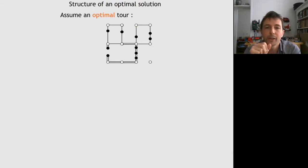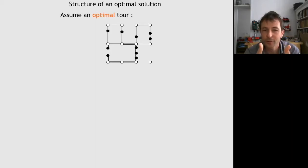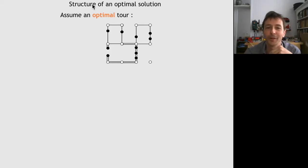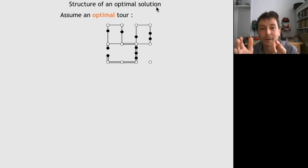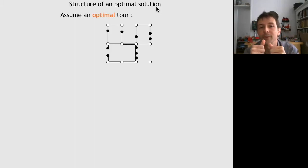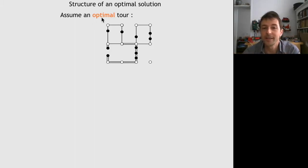We are trying to design a dynamic program — in this case, a shortest-path model. The first question we always have is about the structure of an optimal solution: is an optimal solution made of optimal solutions to smaller problems? In this case, is an optimal tour made of optimal subtours?